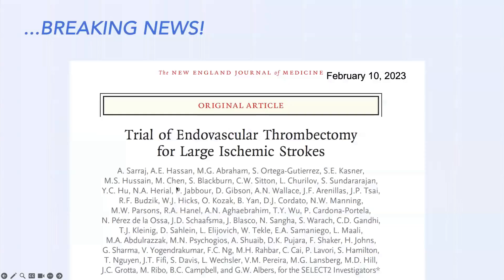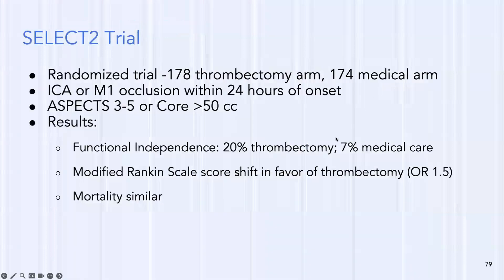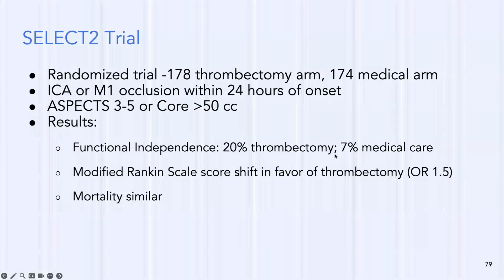Breaking news: two to three studies now show that thrombectomy for large ischemic strokes — large cores or bad ASPECTS — may still benefit patients. The SELECT 2 trial published in the New England Journal of Medicine in February of this year included ICA or M1 occlusions within 24 hours with ASPECTS 3–5 or core infarct >50 cc's. Functional independence was 20% in the thrombectomy arm versus 7% in medical care, with similar mortality. We're now rethinking 'futile thrombectomy' — considering it more carefully depending on each patient's circumstances.